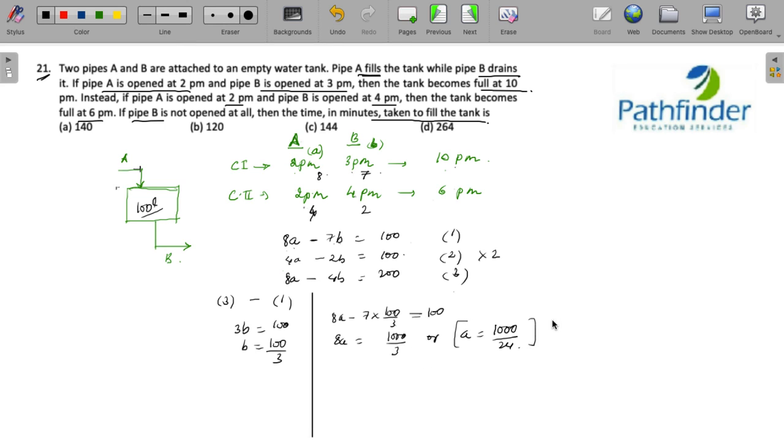A is the rate of A in liters per hour, and 100 liters is the volume. Since 1000 by 24 is the rate per hour, A multiplied by time must give you 100.